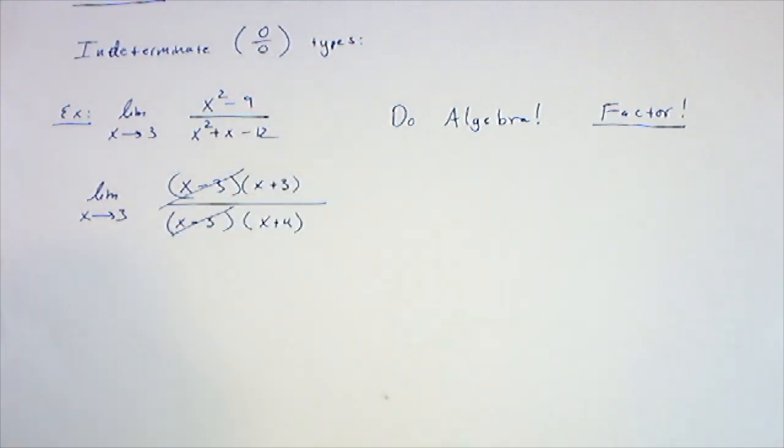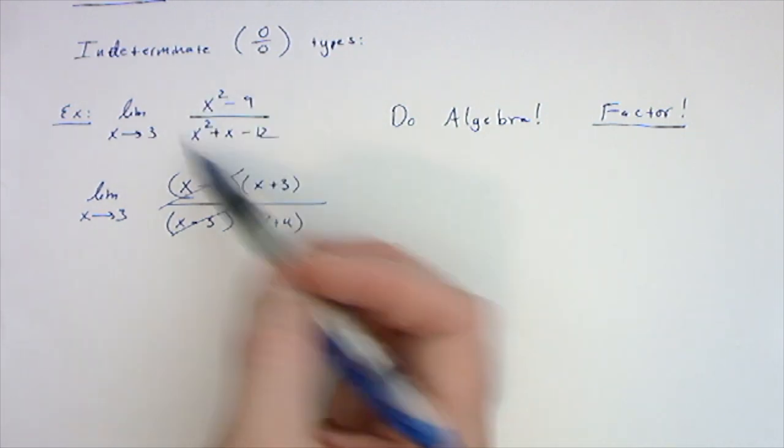Here's the thing, and this is an important thing about a limit. Limit as x approaches 3 is asking what is this function doing as x gets closer and closer to 3, but not actually equal to 3.